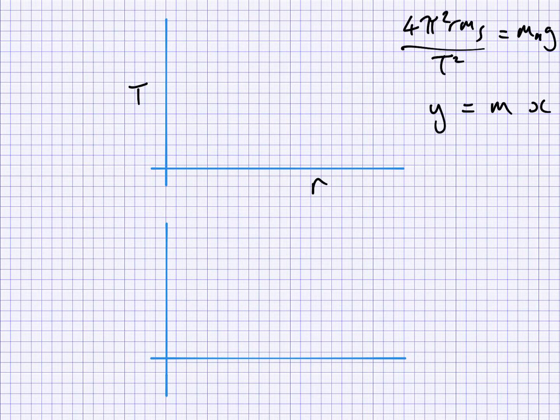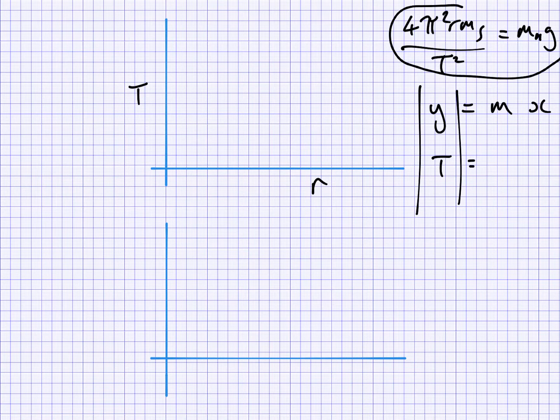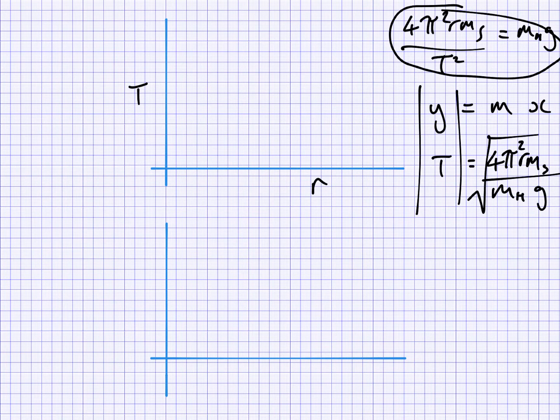So solving for the y axis, well, that's the period. So I'm going to have to rearrange this equation to solve for period, which is going to give me, let's do that quickly, 4π²rm, and that's mass of the stopper, over mass of the hanging mass times gravity, and then I have to square root the whole thing.